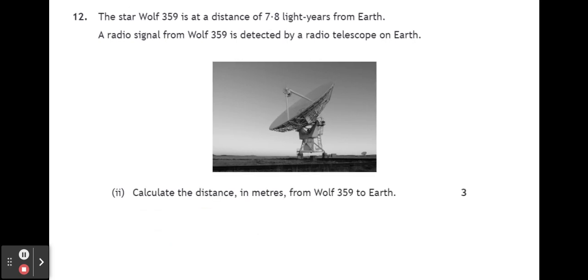Part two, it says calculate the distance in meters from Wolf 359 to Earth. Now we know that it's 7.8 light years from Earth. So we can use the formula distance equals speed times time to work out the distance in meters. Because 7.8 light years is the distance that you would travel if you were traveling at the speed of light for 7.8 years.